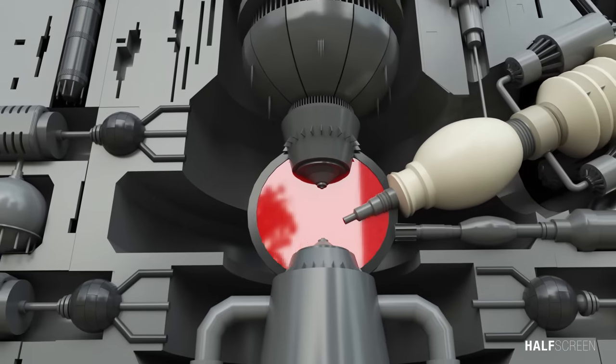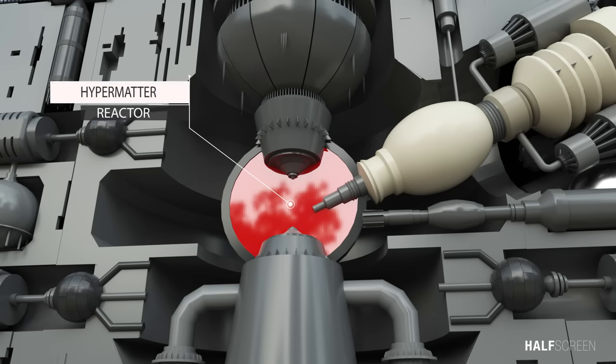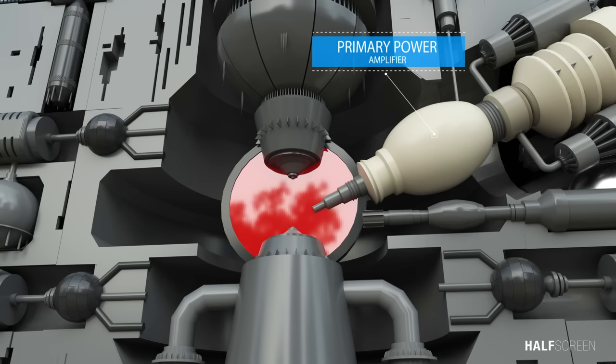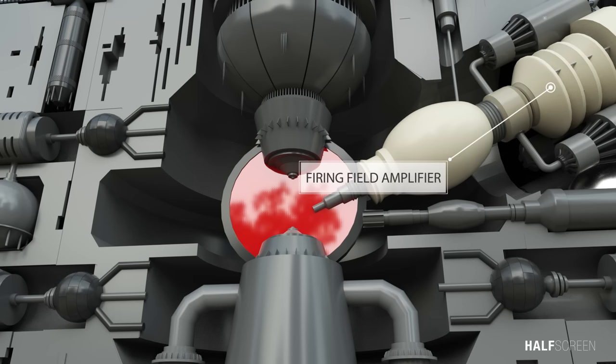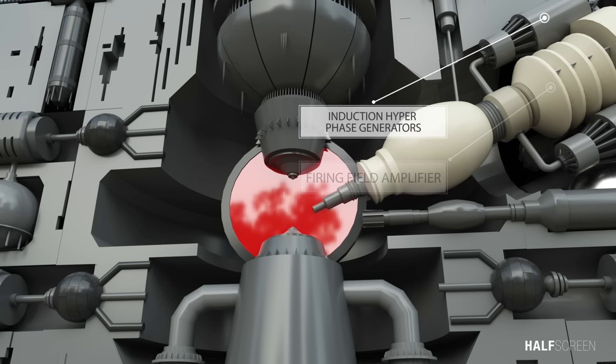At the center of the Death Star is the hypermatter reactor that fed energy into various components of the superlaser, including the primary power amplifier, the superlaser power cell, the firing field amplifier, and the induction hyperphase generators.